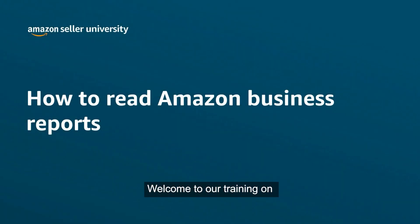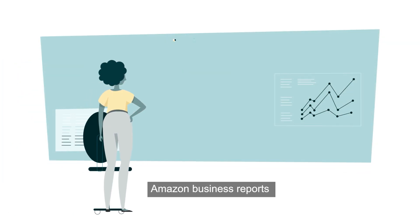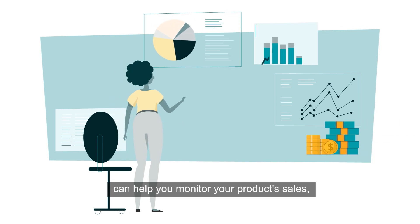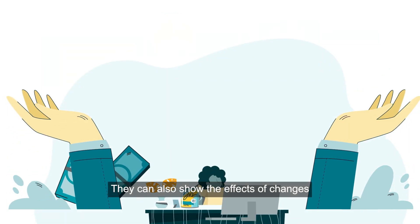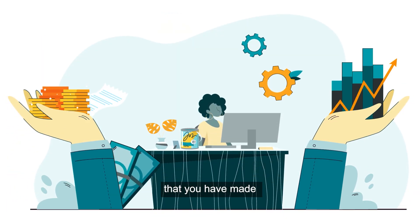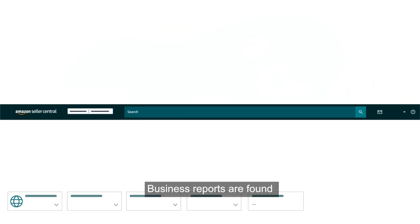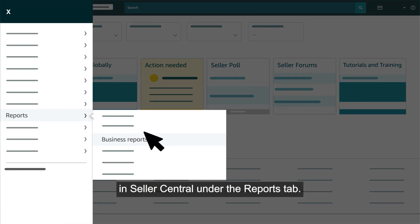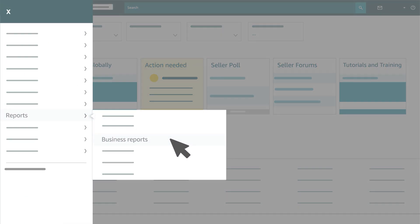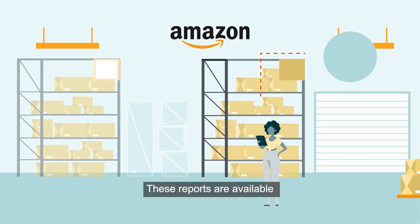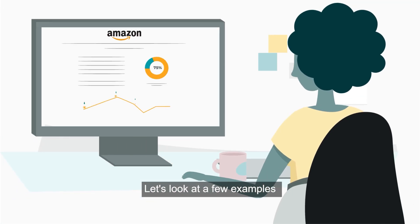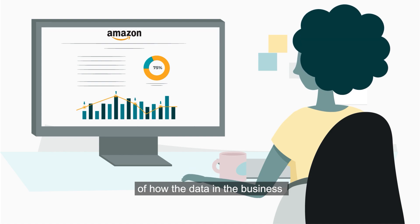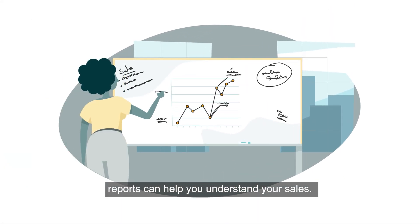Welcome to our training on how to read Amazon Business Reports. Amazon Business Reports can help you monitor your product's sales, traffic, and conversion rates. They can also show the effects of changes that you have made in your selling strategy. Business Reports are found in Seller Central under the Reports tab, and are available if you have the professional selling plan.